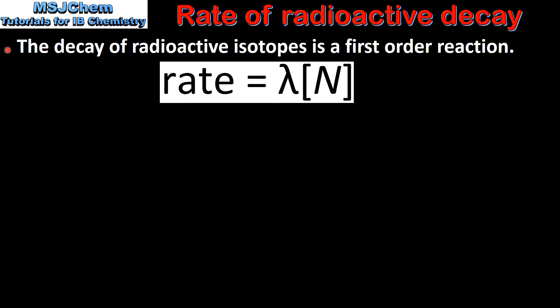The decay of radioactive isotopes is a first order reaction, where the rate equals the decay constant multiplied by the amount of isotope at time t.